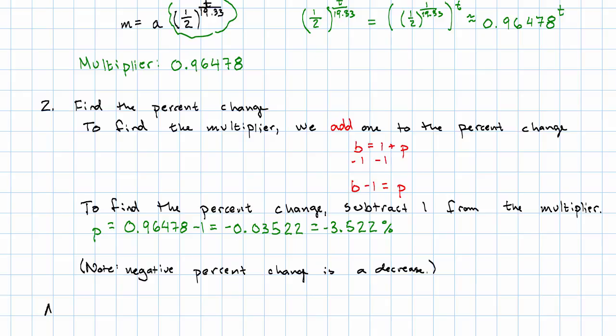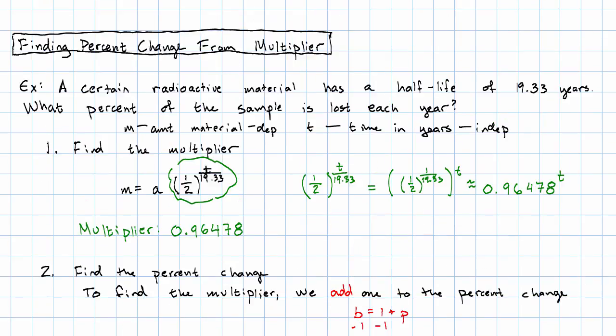The answer to our question, the amount decreases by about 3.522 percent each year. In order to figure that out again, first we find the multiplier by rewriting the equation, and then we find the percent change by subtracting 1.